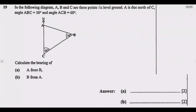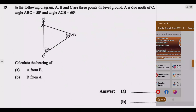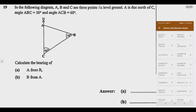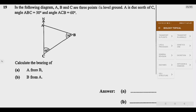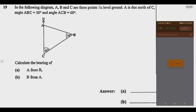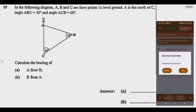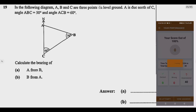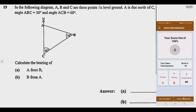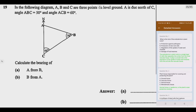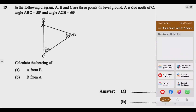Question 19. In the following diagram, A, B and C are three points on level ground. A is due north of C, and angle ABC equals 50 degrees, and angle ACB equals 60 degrees. Calculate the bearing of: question A, A from B; question B, B from A.